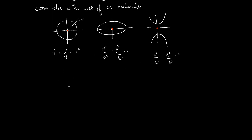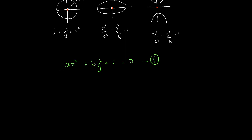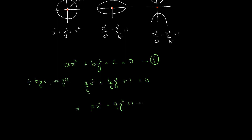If we observe, we can write the general equation of these three as: Ax² + By² + C = 0. All three equations are of this form. We can further reduce this equation by dividing throughout by C, giving us (A/C)x² + (B/C)y² + 1 = 0. For simplicity, we write this as px² + qy² + 1 = 0.